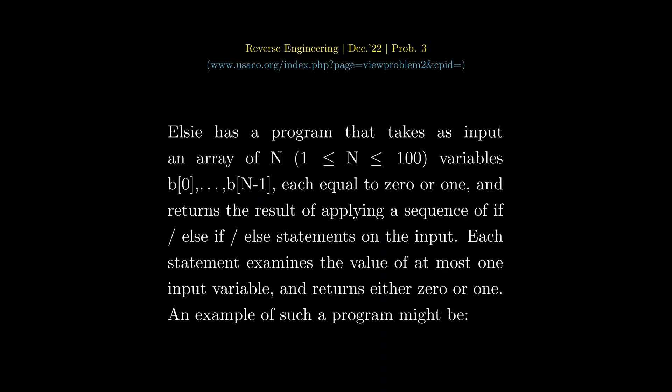Elsie has a program that takes as input an array of n variables each equal to 0 or 1, and returns the result of applying a sequence of if-else if-else statements on the input. Each statement examines the value of at most one input variable and returns either 0 or 1. An example of such a program might be as shown.